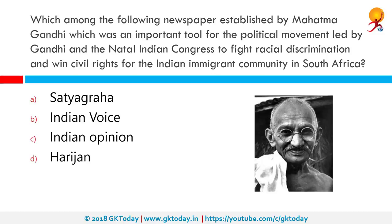Which among the following newspapers established by Mahatma Gandhi was an important tool for the political movement led by Gandhi and the Natal Indian Congress to fight racial discrimination and win civil rights for the Indian immigrant community in South Africa? The correct answer is Indian Opinion. It was established by Gandhiji as an important tool for the political movement to fight racial discrimination and win civil rights for the Indian immigrant community in South Africa, existing between 1903 and 1915.